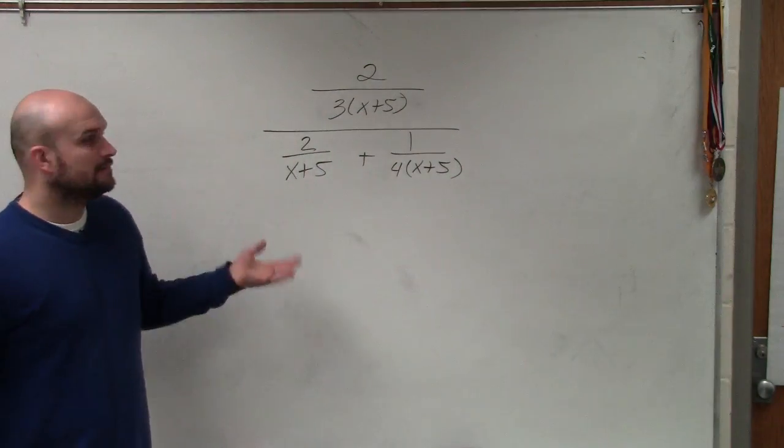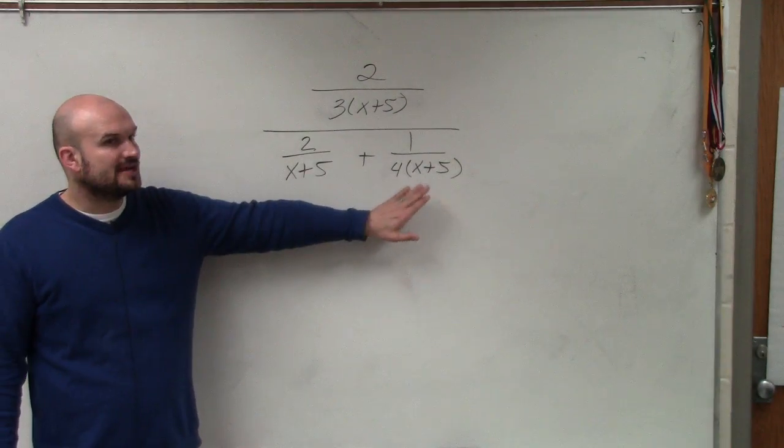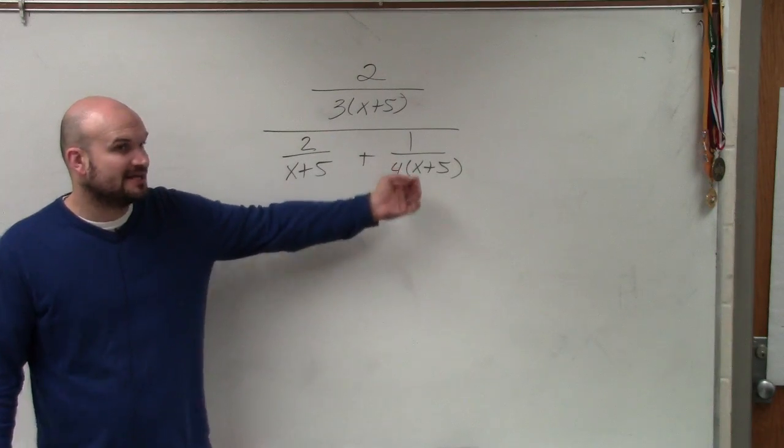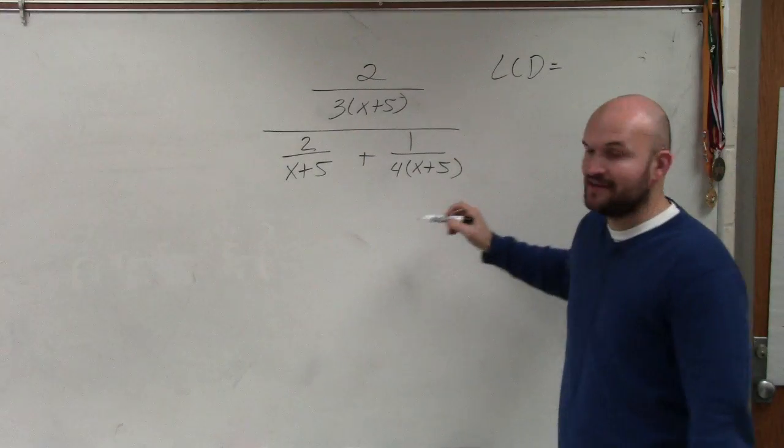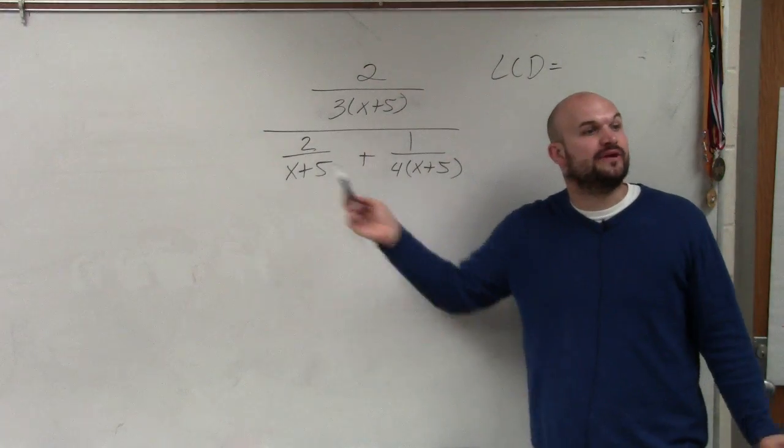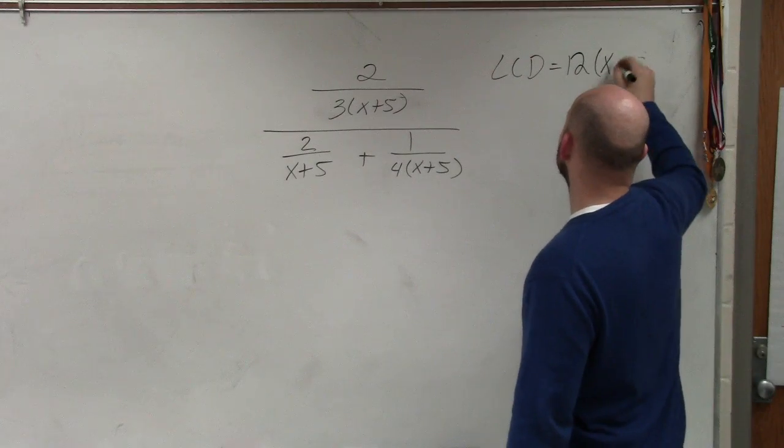It was 4x plus 20. So now what I want you guys to understand is my common denominator is not just (x+5), but it's also the common denominator of 3 and 4, which is 12 times (x+5).